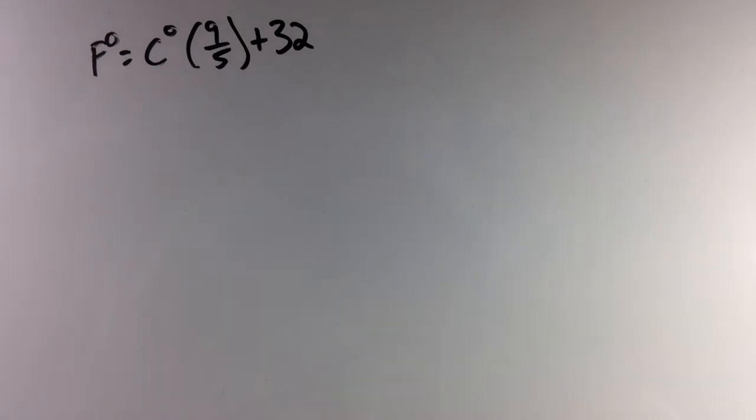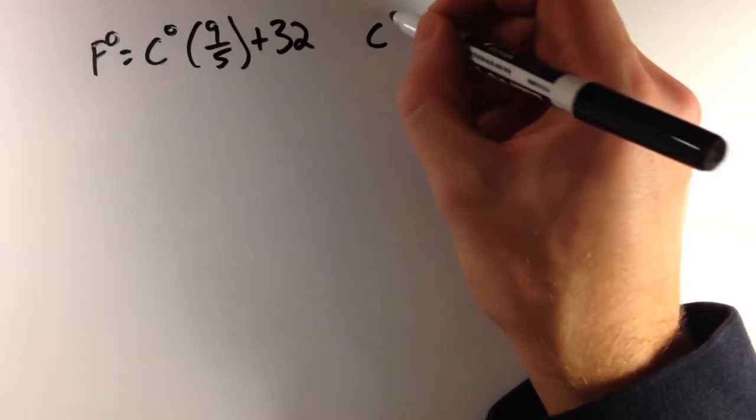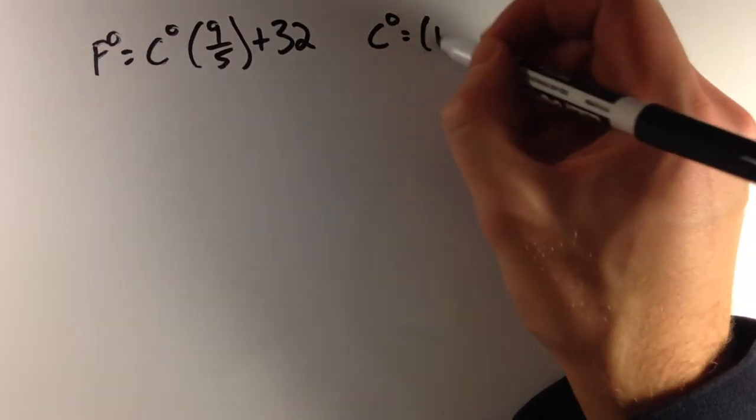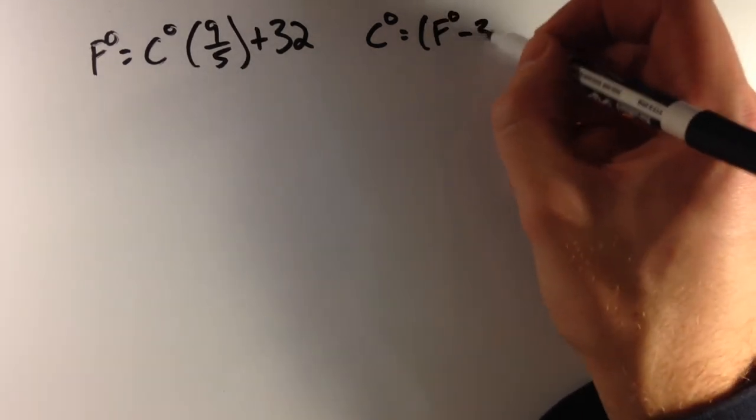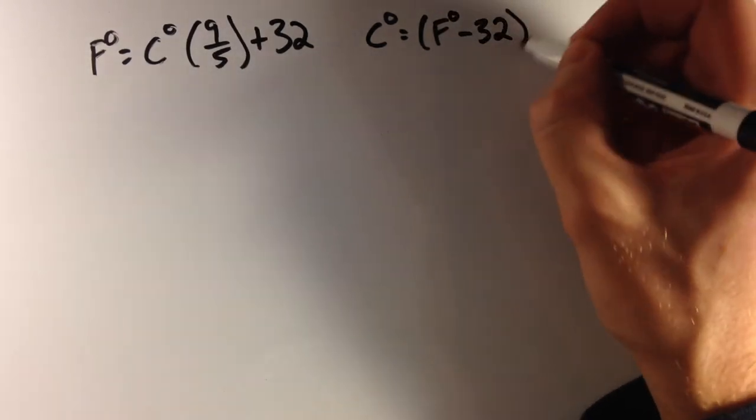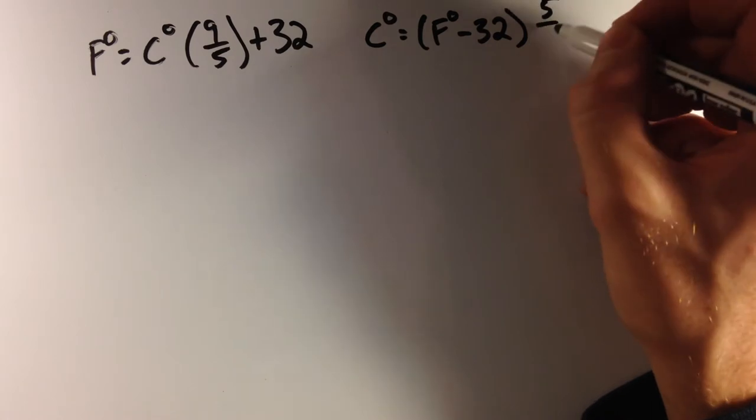And the formula to find Celsius in terms of Fahrenheit is C = (F - 32) × (5/9).